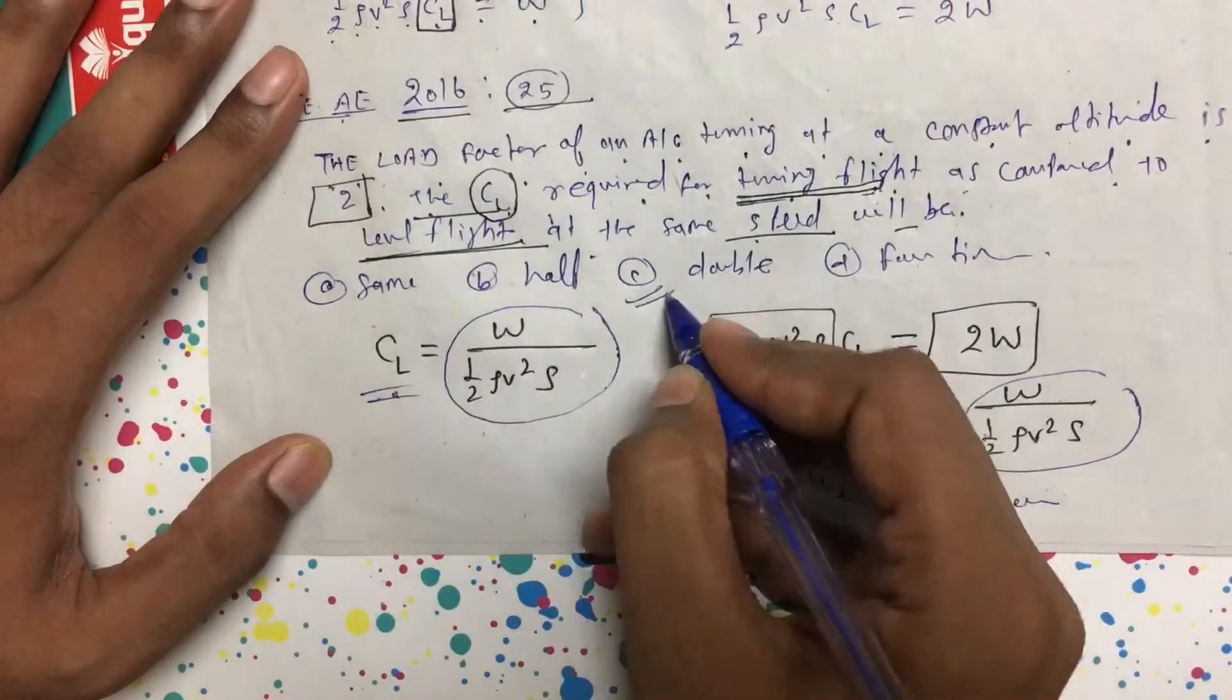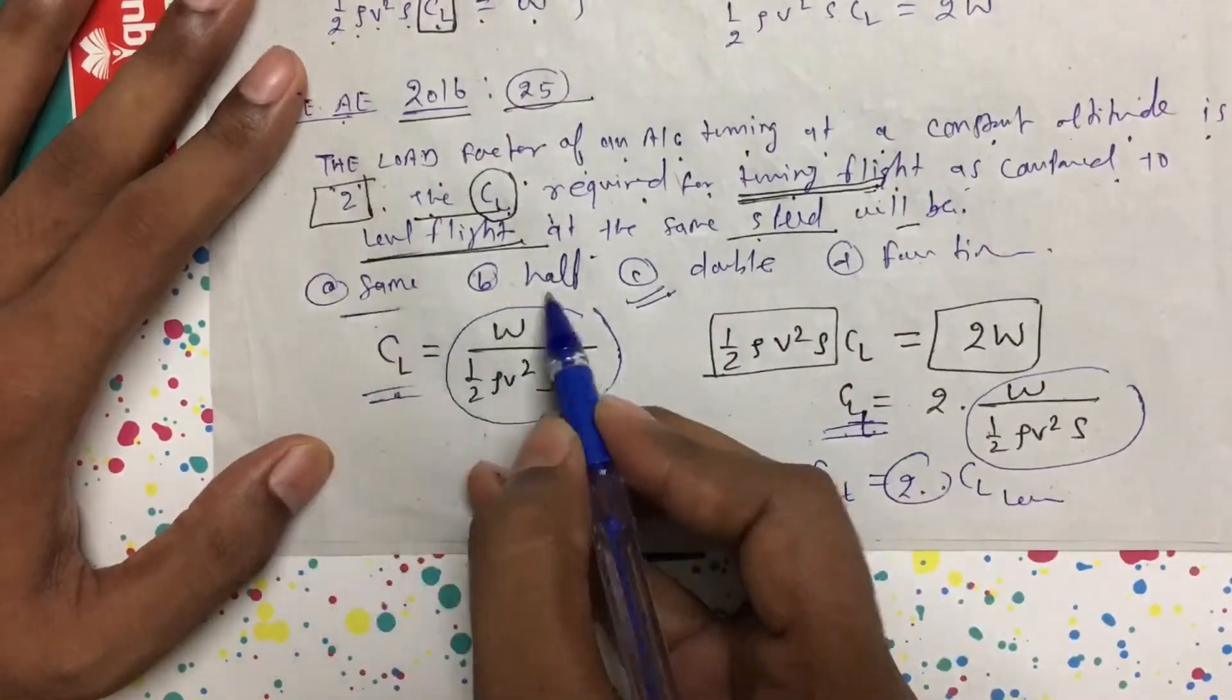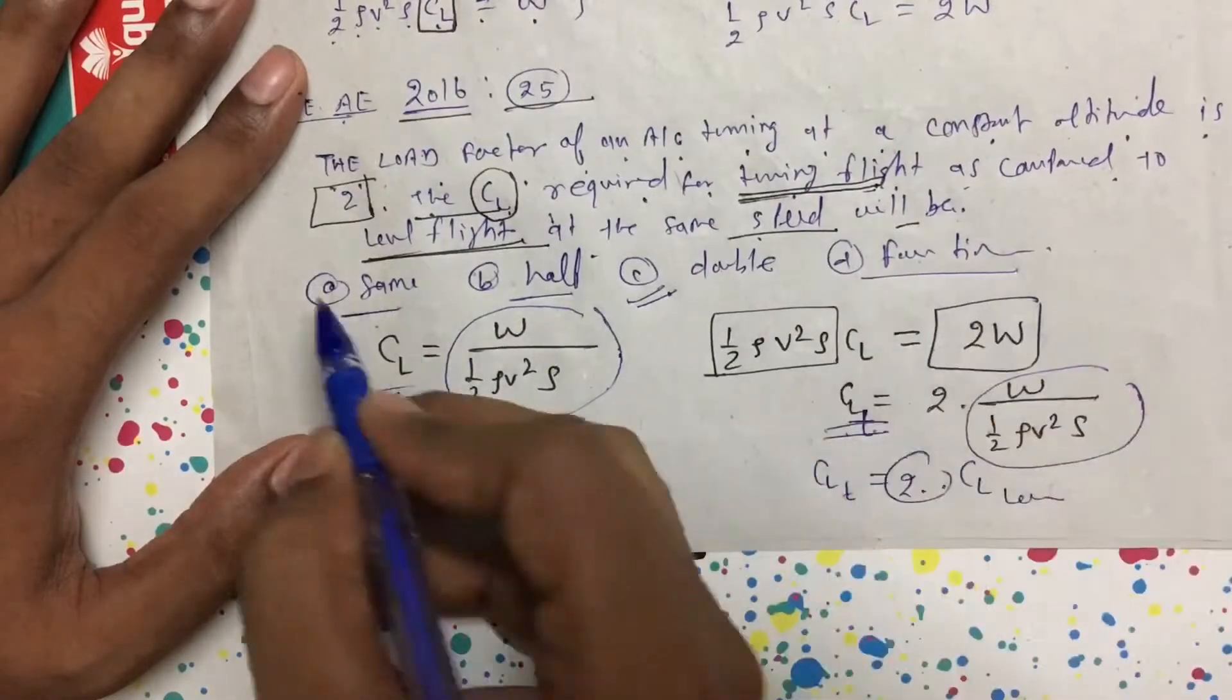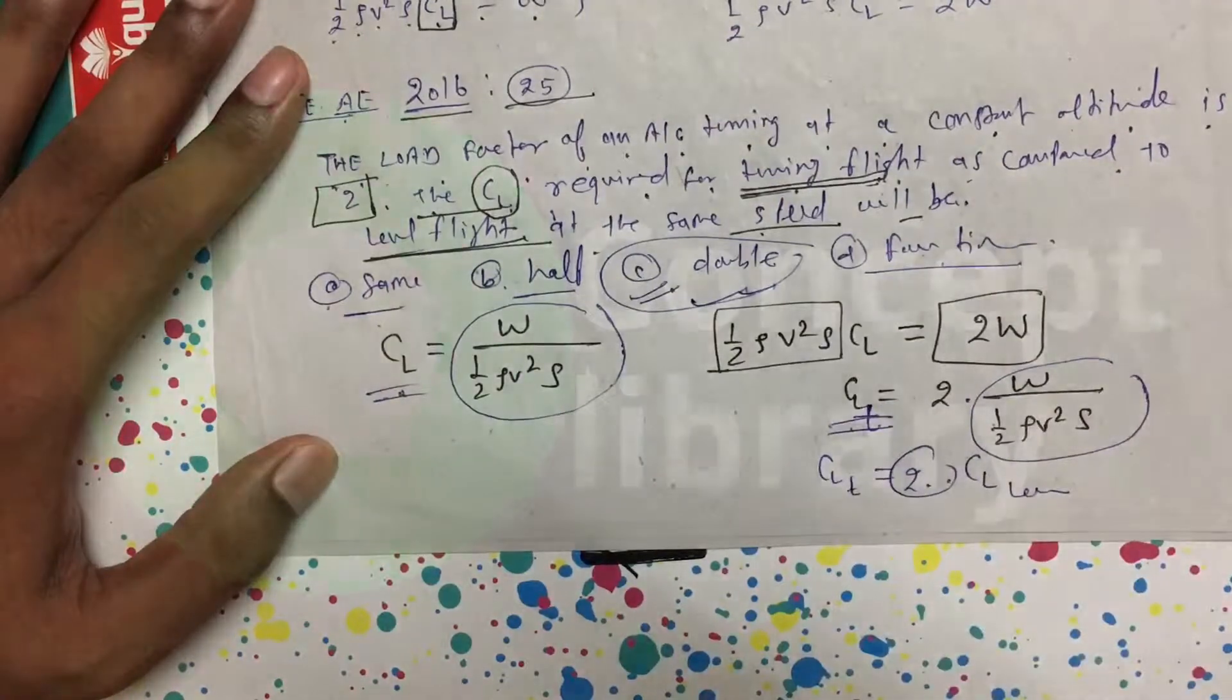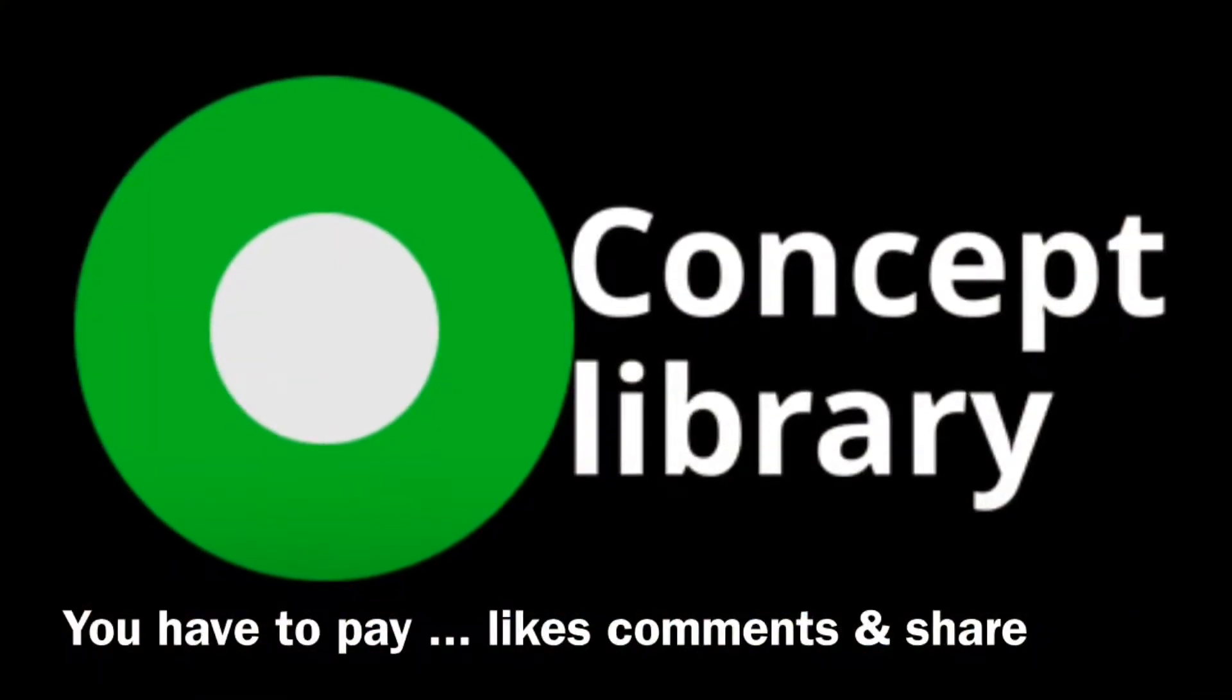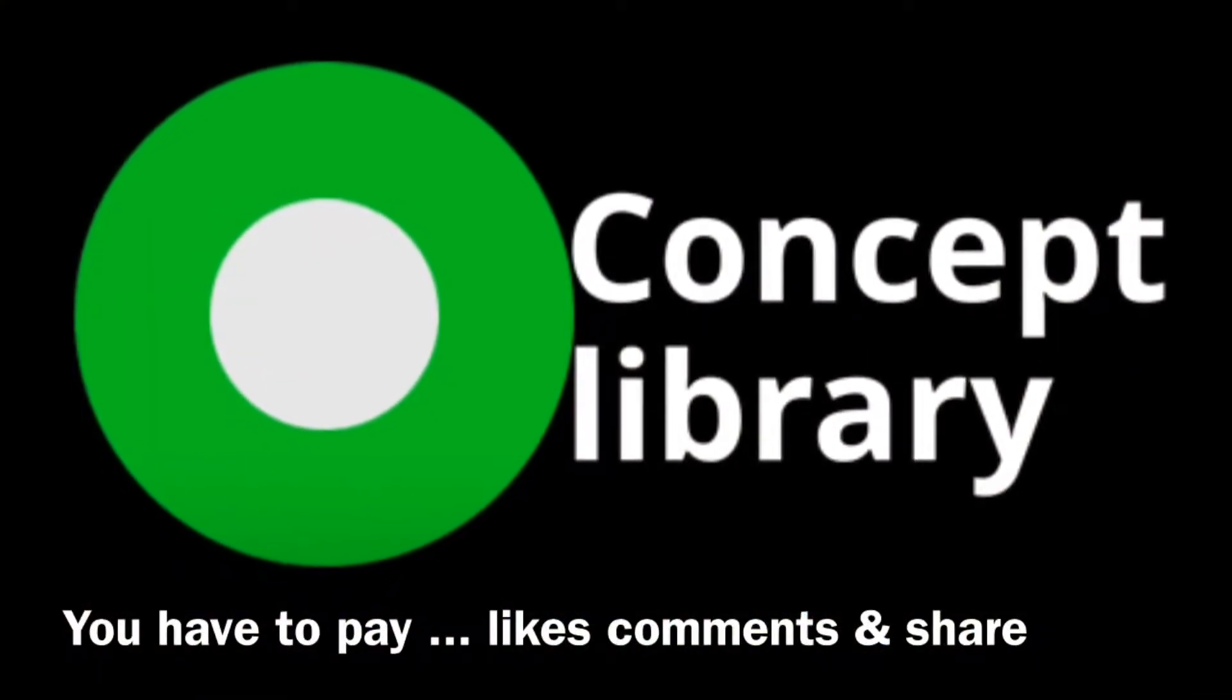The other options were same, half, and 4 times—these three options are wrong. I hope this is clear. Thank you! Please hit the like button, comment your doubts, and subscribe to the channel. Thank you so much!